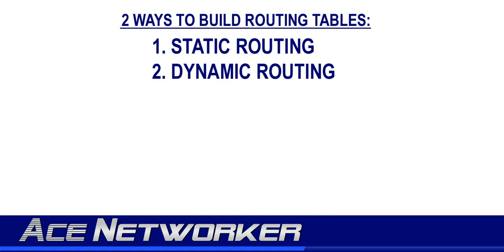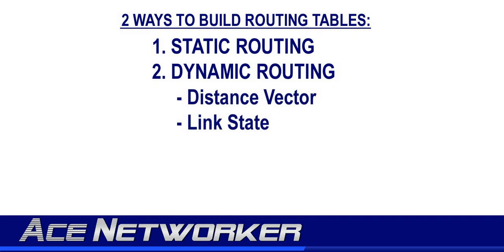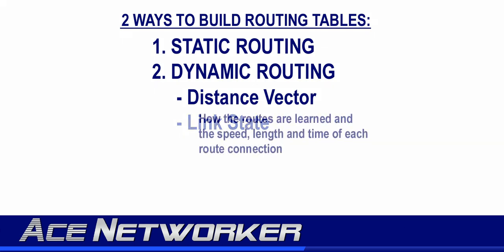There are two categories of dynamic routing, or two types of dynamic routing protocols, that you will need to know — not only for the Network Plus exam, but for any work you do in your networking career. Those two types are link state and distance vector. In this short routing table tutorial, I'm going to cover each of them from the 30,000-foot view to explain them as simply as possible. We won't get into the minute details of each in this video, but I'll show you a basic idea of each.